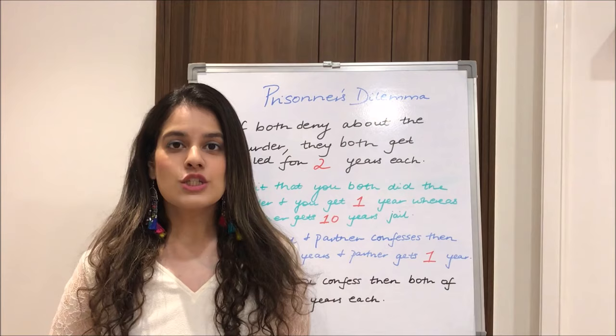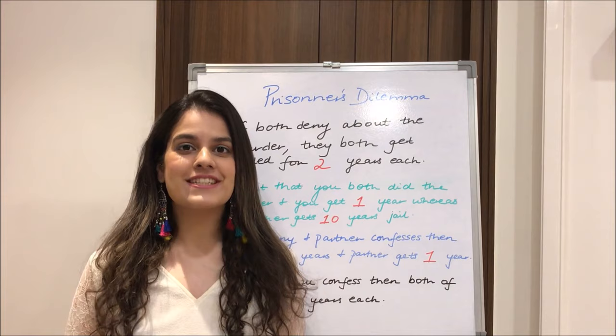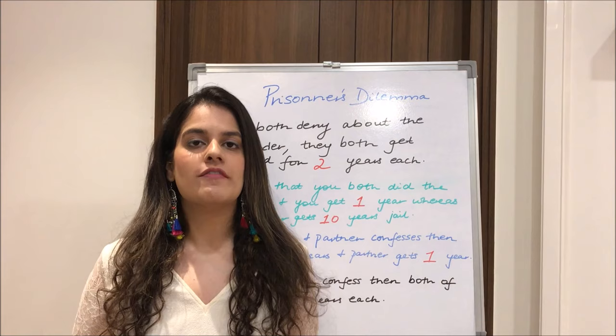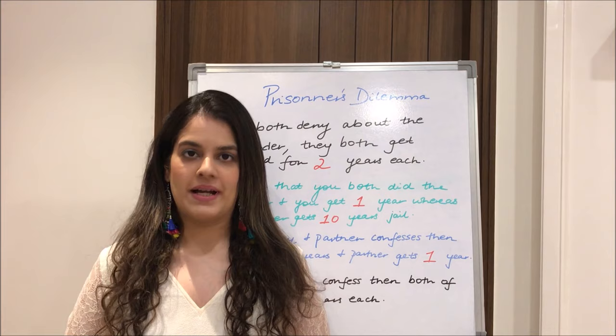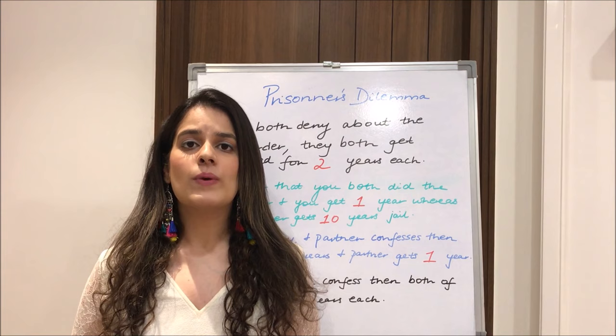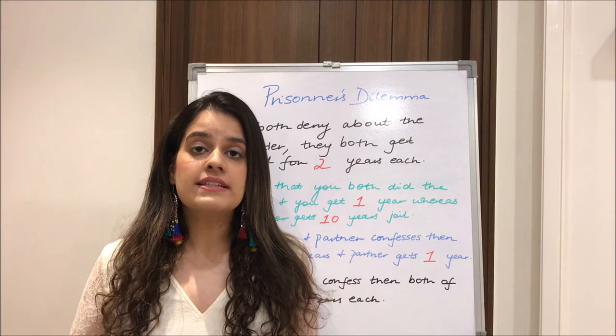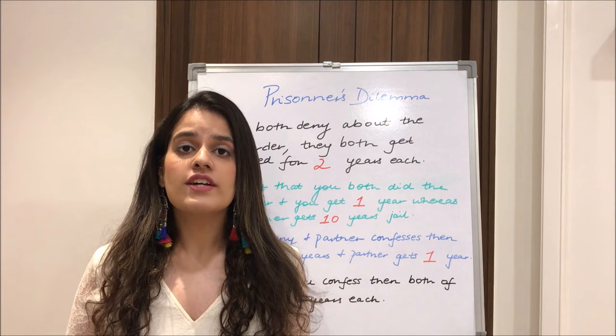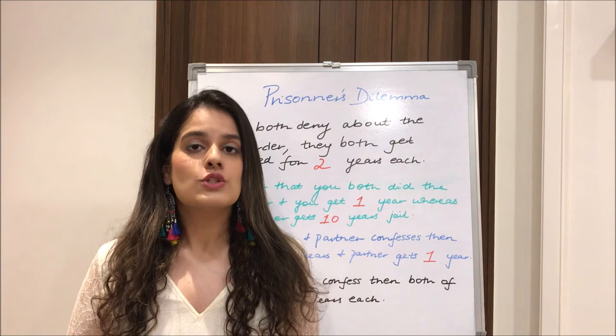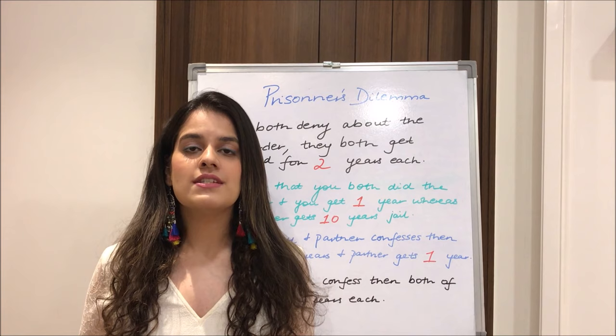Moving further to the very famous example under game theory, which is prisoner's dilemma. As the name suggests, we have two prisoners who have been caught by the police and are in a dilemma — a problematic state of mind. The two prisoners are called Sanjay and Vijay. They have been convicted for a minor crime like drug selling, but the police suspects they both committed a far more heinous crime such as murder, though they have no evidence. So they try to interrogate them and force a confession, locking them in separate prisons.